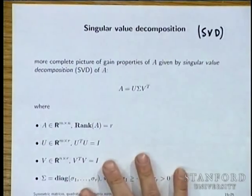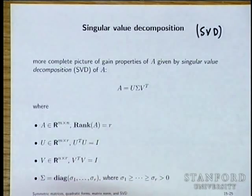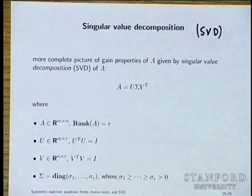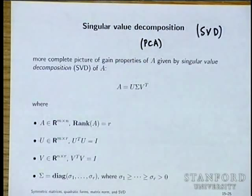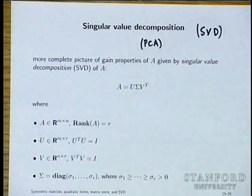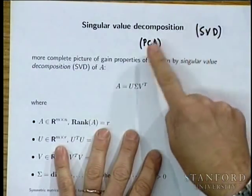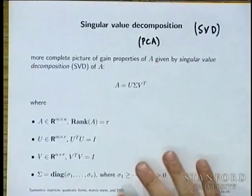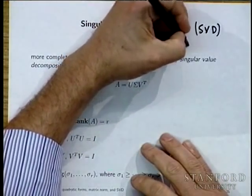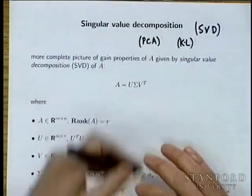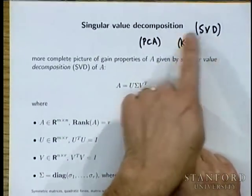Historically the SVD has been around for quite a while — certainly 100 years, well-known in the 1920s and 30s. It's been used in statistics. You'll hear other names for it; the most common is PCA, which is principal component analysis. You'll also hear it called the Karhunen–Loève expansion. The main names are singular value decomposition and principal component analysis.